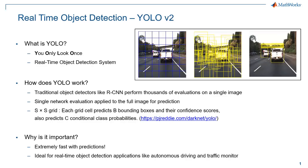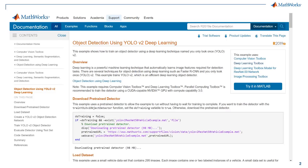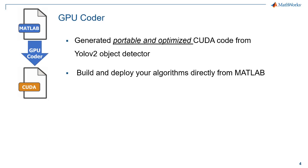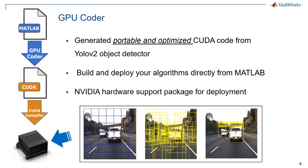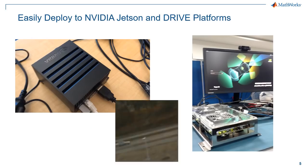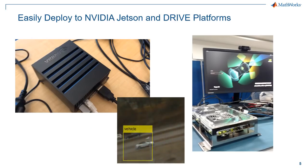YOLO has become very popular and important as it is considered the state-of-the-art technique since it uses a single network and is very fast for real-time object detection. Even if you are not familiar, you can get started with YOLO v2 with this published example in MATLAB that explains how you can train a YOLO v2-based object detector on your data. Then, using GPU Coder, you can generate optimized CUDA code to target NVIDIA boards like the Jetson Xavier directly from MATLAB. The hardware support package for NVIDIA enables you to deploy the generated code to the Jetson and the Drive platform, as you will see in the demo that follows.